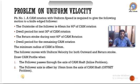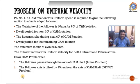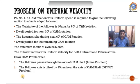Let us consider our first problem — a problem on uniform velocity. A cam rotating with uniform speed is required to give the following motion to a knife edge follower: out stroke of 40 mm for 60 degrees of cam rotation, dwell period for the next 30 degrees, return stroke during the next 60 degrees, and dwell for the remaining cam rotation. The minimum radius of the cam is 50 mm. The follower moves with uniform velocity for both outward and return stroke. We draw the cam profile for two conditions: first, the inline condition where the follower passes through the axis of the camshaft, and second, the offset condition where the follower axis is offset by 15 mm from the camshaft axis.